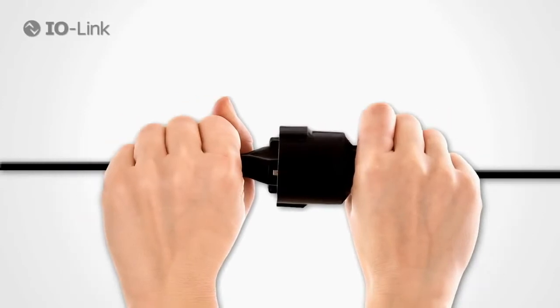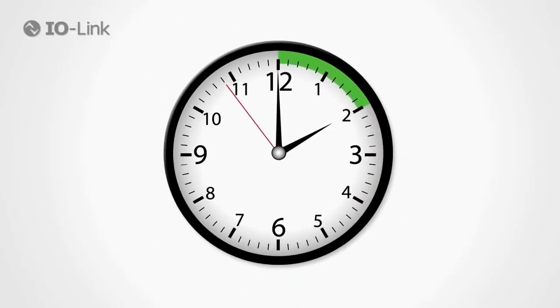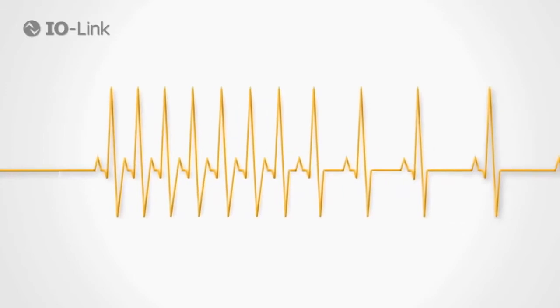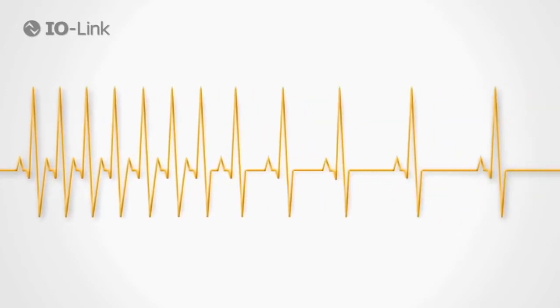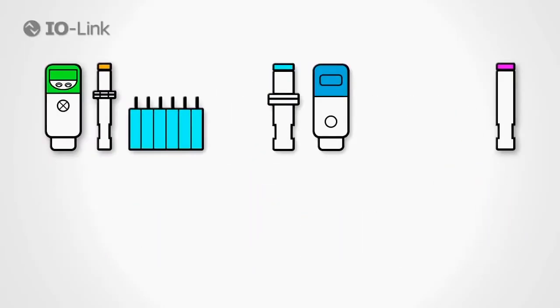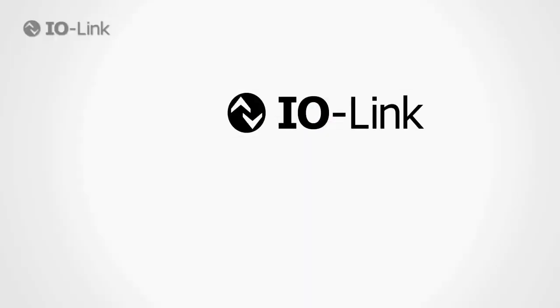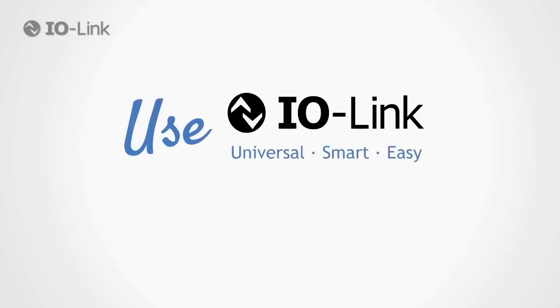Installing IO-Link on your devices is easy — it saves time, spares your nerves, and cuts back on sensor types. Not to mention the new possibilities that opens up for machine design. That's IO-Link: universal, smart, easy.